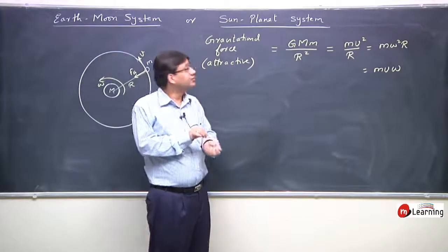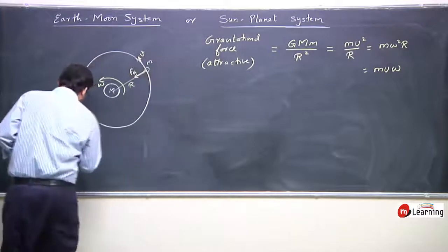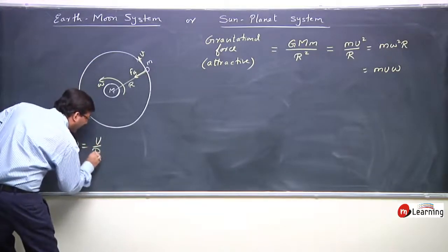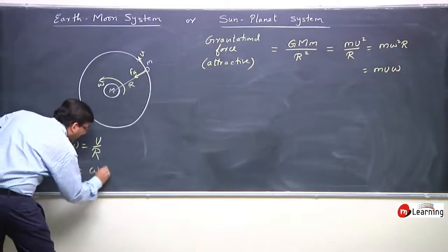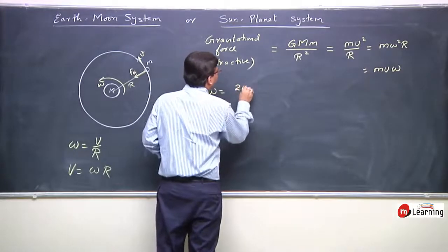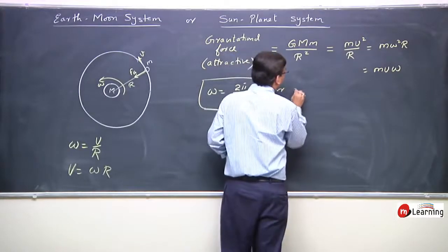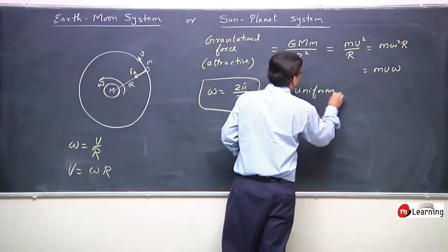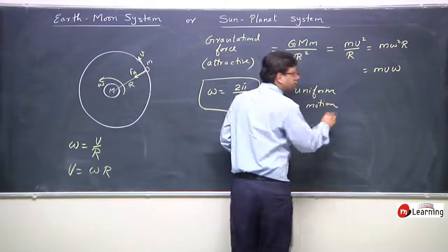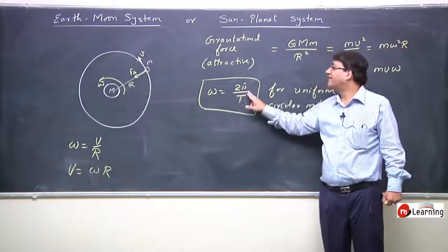Now, I have to find the linear speed in terms of omega. We have to know the expression: we have to know R, and V equals omega R. But omega may also be written as 2π by time period T. This holds for uniform circular motion.